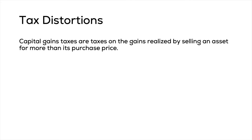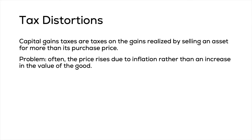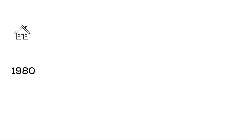The final cost is tax distortion. Capital gains taxes are taxes on the gains realized by selling an asset for more than what you purchased it for. The problem is that often the price rises due to inflation rather than an actual increase in the value of the asset.